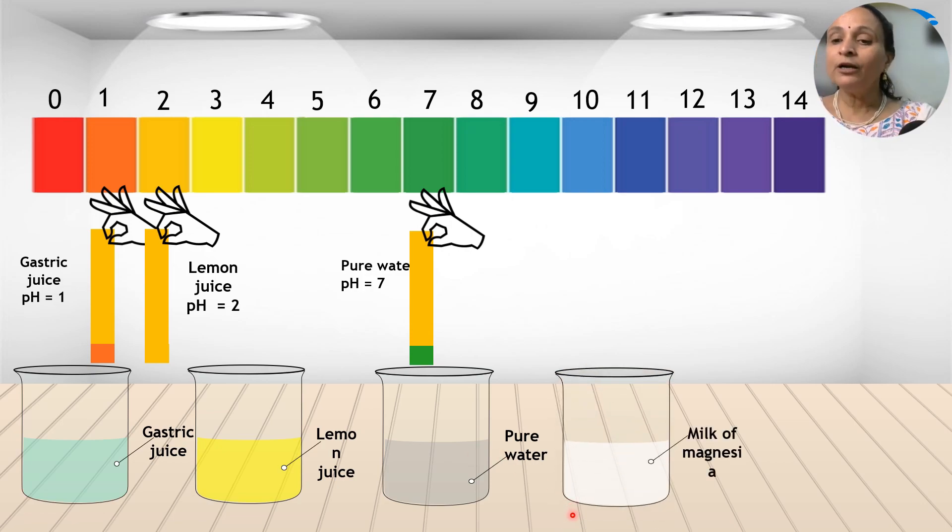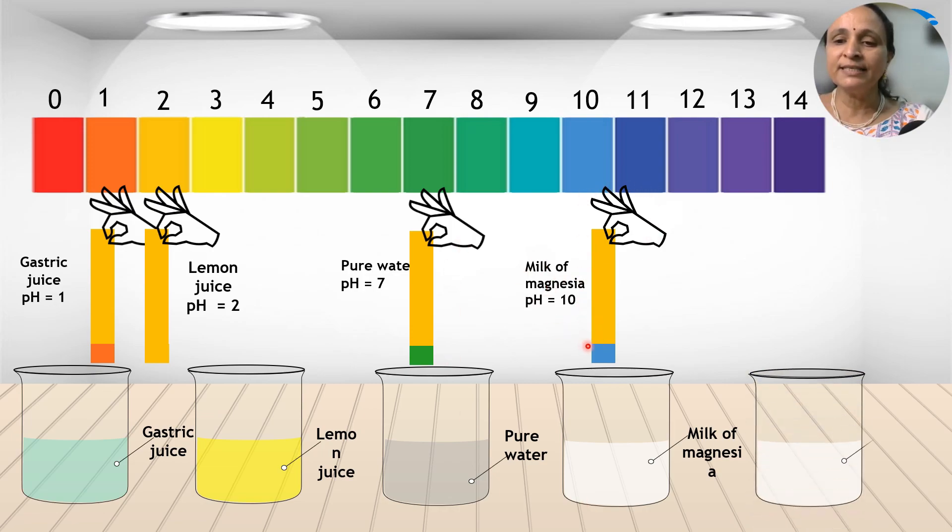Now you take milk of magnesia. Milk of magnesia is the one when acidity happens. Milk of magnesia is taken in the beaker. Again dip a universal paper into it. Color changes and compare. It is matching with 10. So pH of milk of magnesia is 10.